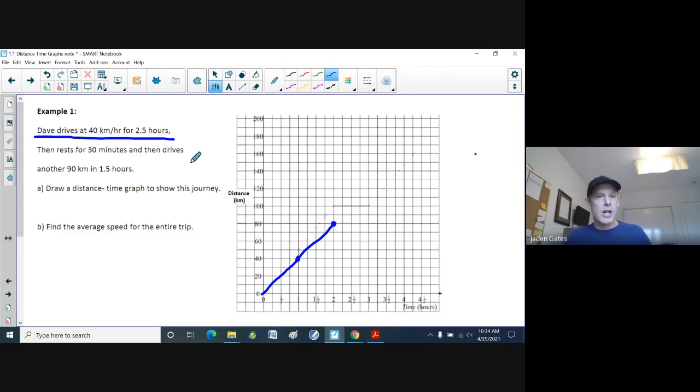Now, Dave isn't done yet because he's got another half hour. If you're driving 40 kilometers in one hour, that means you're driving 20 in half an hour or 30 minutes. So I'm going to go over to two and a half hours here, and then add 20 from 80, which would be 100. There we go.